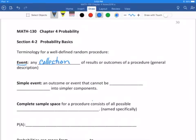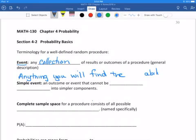An event is any collection of results or outcomes of a procedure. This is anything that you're going to be finding the probability of. So for example, if we're talking about flipping a coin, an event could be the coin landing on heads or a different event could be the coin landing on tails.